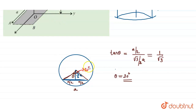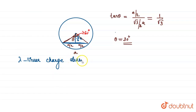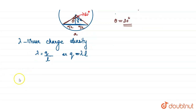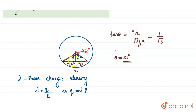The total angle now becomes 60 degrees. Lambda is the linear charge density, given by lambda equal to q divided by length, or q equal to lambda times length. According to Gauss's law, the electric flux through the surface is phi equal to total charge enclosed q divided by epsilon 0, which gives lambda L divided by epsilon 0.